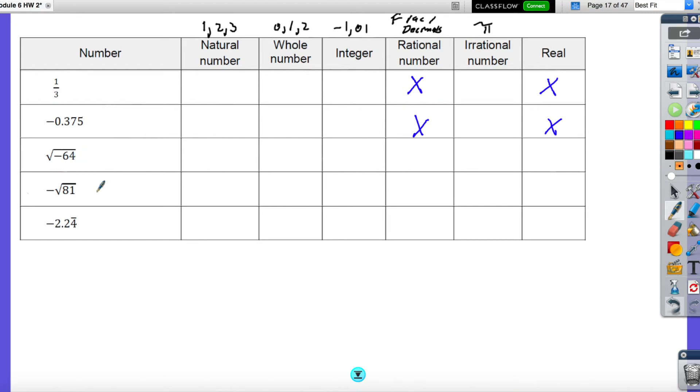Negative square root of 81. Well, the square root of 81 is 9. And then you still have that negative in front of it. So it's negative 9. So that would be an integer and a rational number and a real number.